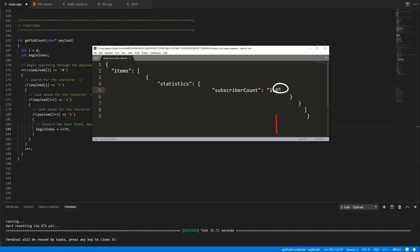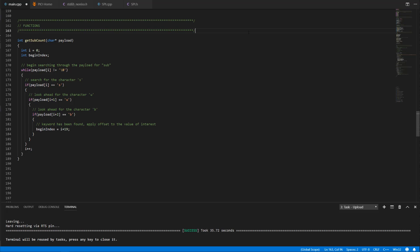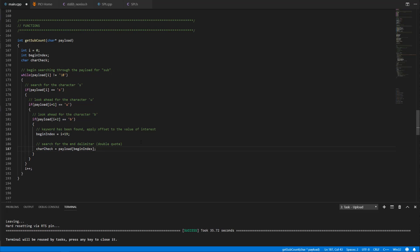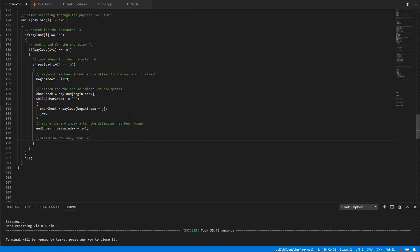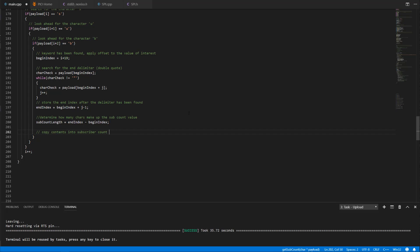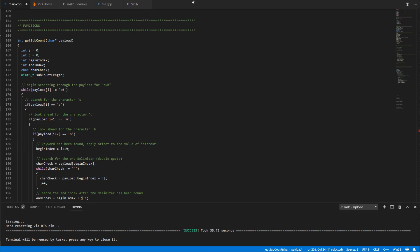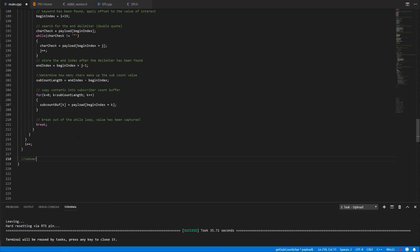Since the subscriber count value can vary in length, we can't use a fixed offset. Within another while loop, the indexing variable j will be used to keep track of how many characters are between the double quotes. Now that the position of the delimiter is known, we can find the value's ending index by adding the variable j minus 1 to the beginning index. So now we have all the information we need to pull the subscriber count value out of the rest of the data. We will move these characters into their own buffer and then break from the while loop to end the search. Next I'll be converting these characters into an integer data type using the atoi function. I realize that atoi is obsolete and doesn't really do any error handling, but my use case is simple enough and I'm not worried about going over the top with error handling at this point. Lastly, the function will return this value as an integer.